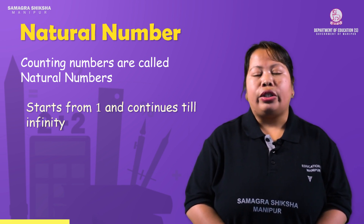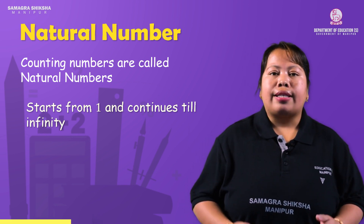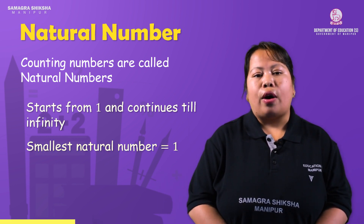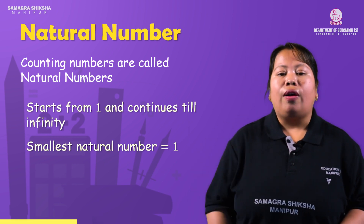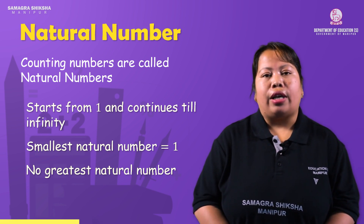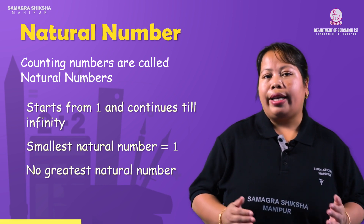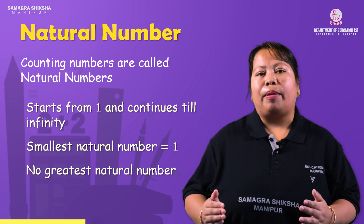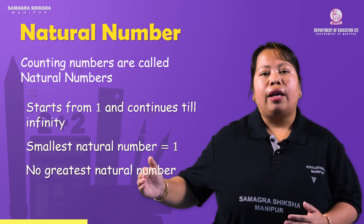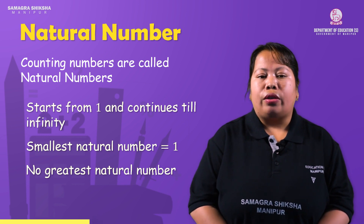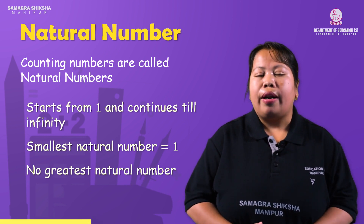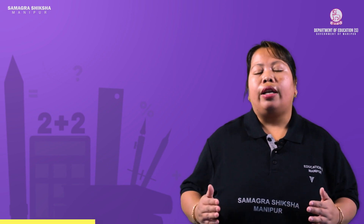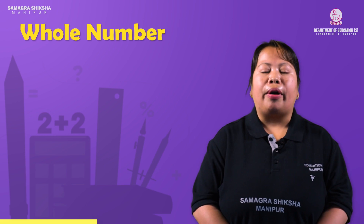Natural numbers start from 1 and continue to infinity. That means the smallest natural number is 1 and there is no greatest natural number — it extends to infinity. As we go from left to right on the number line, the natural number will increase.